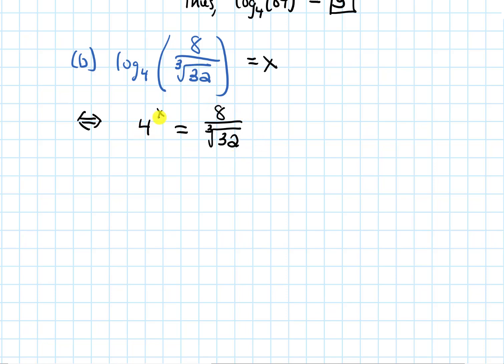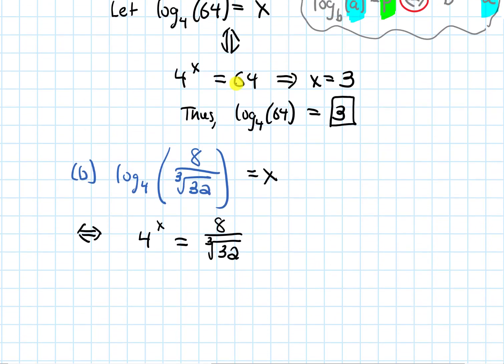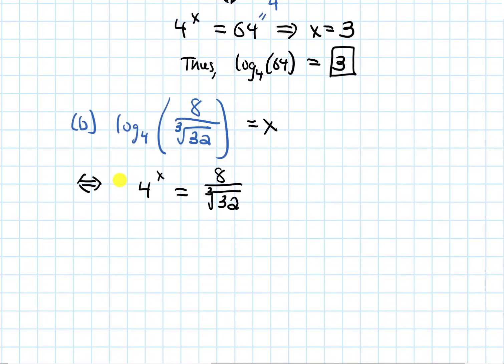This one is a little bit trickier. With the last one, 64 was already a nice power of 4, already 4 cubed. But here, I don't have that same sort of base on both sides. So what I'm going to try to do is get a common base. If I look at these numbers like 4 and 8 and 32, the common base is 2 because 4 is 2 squared.